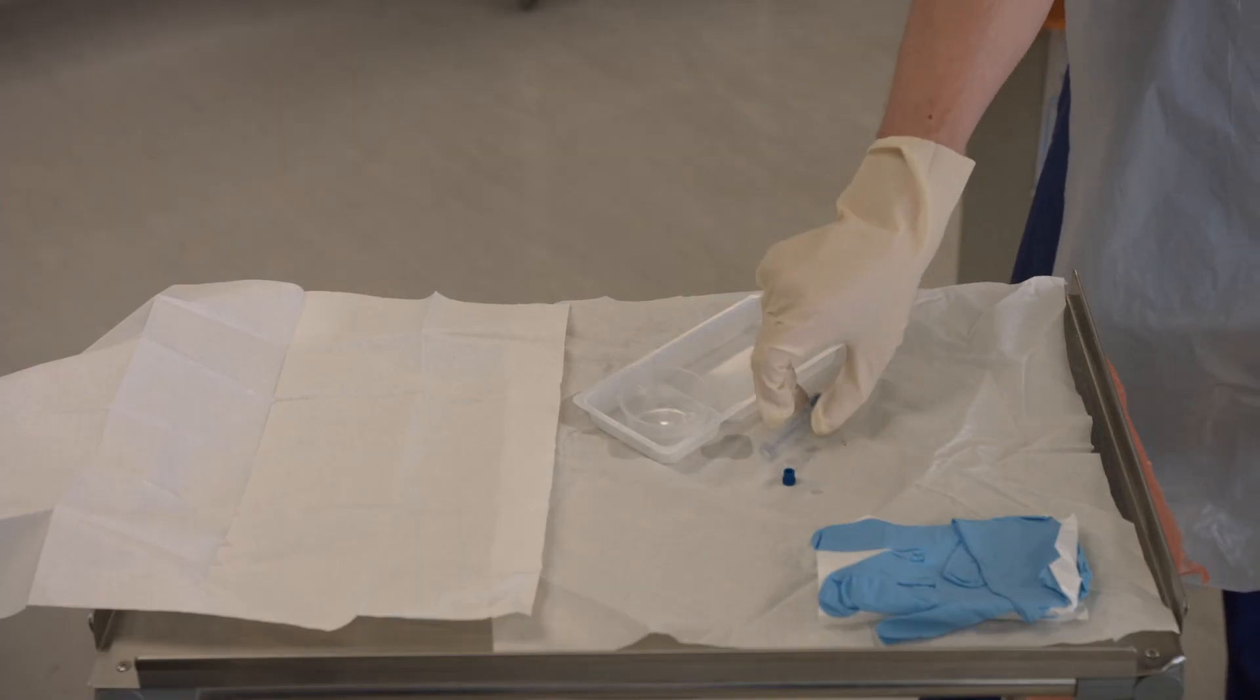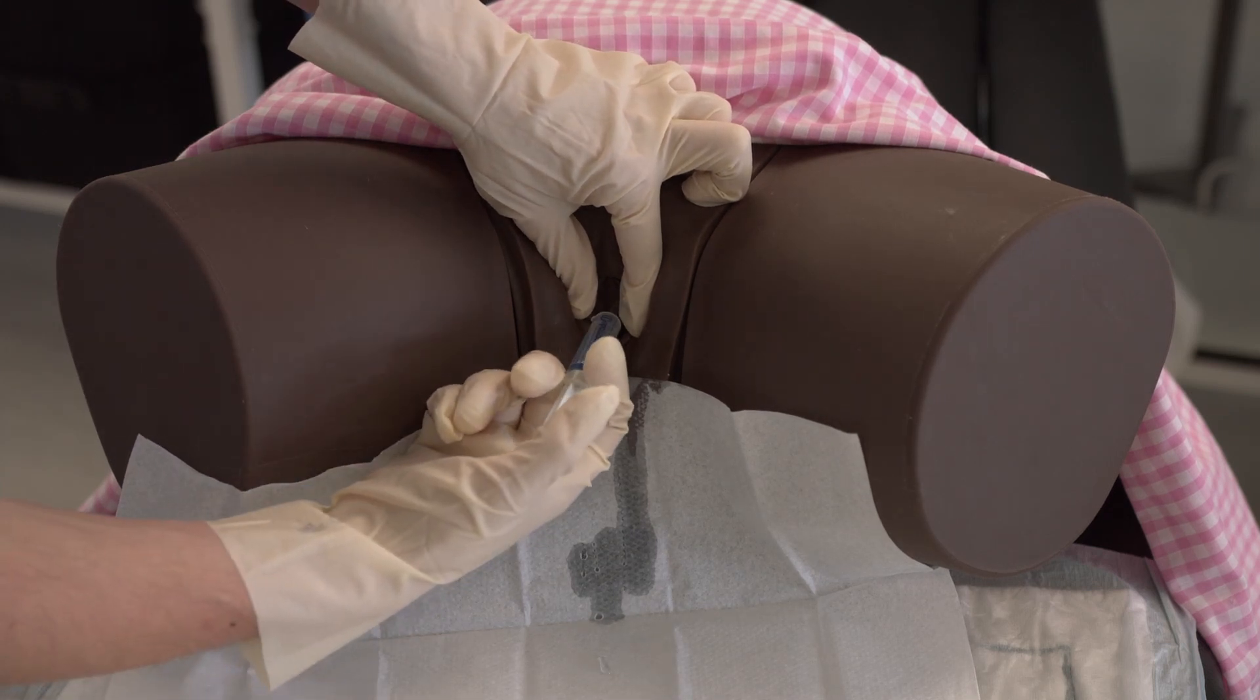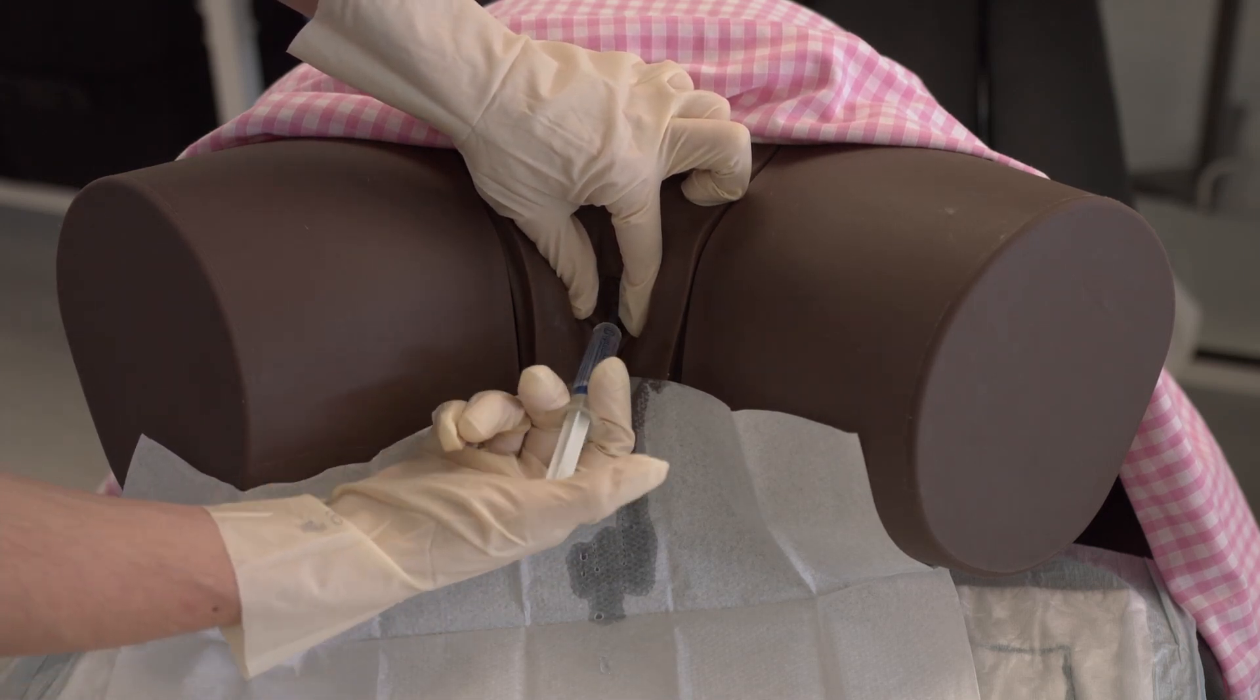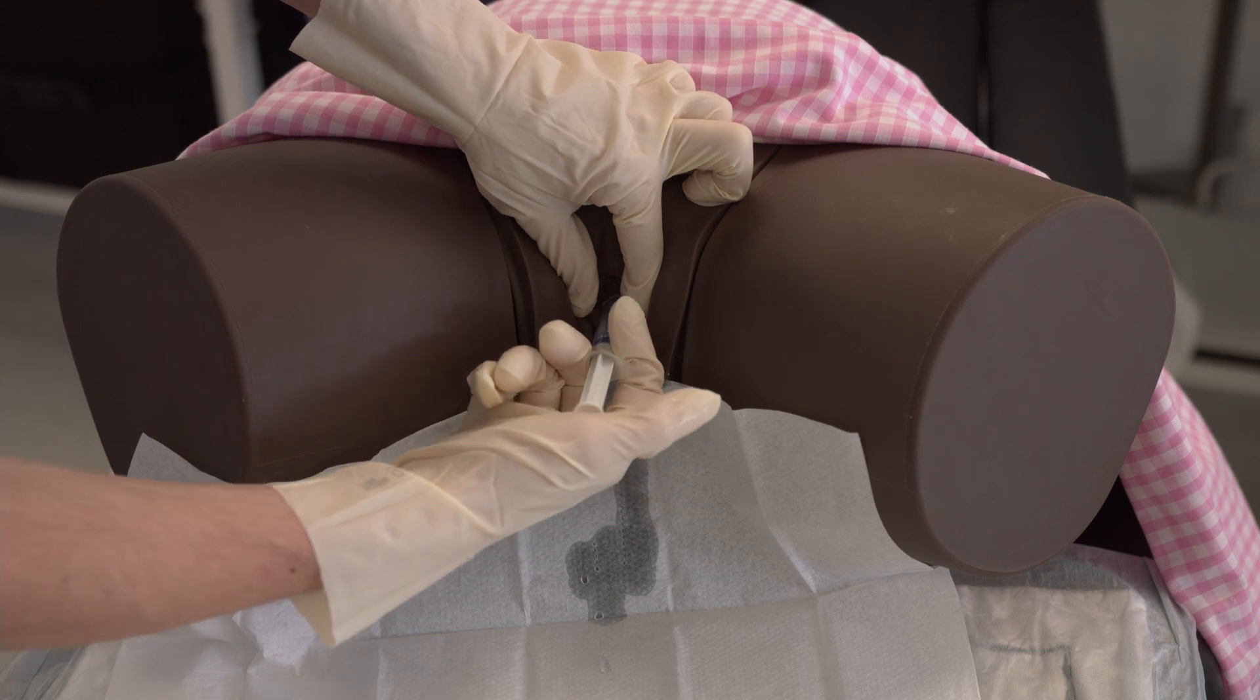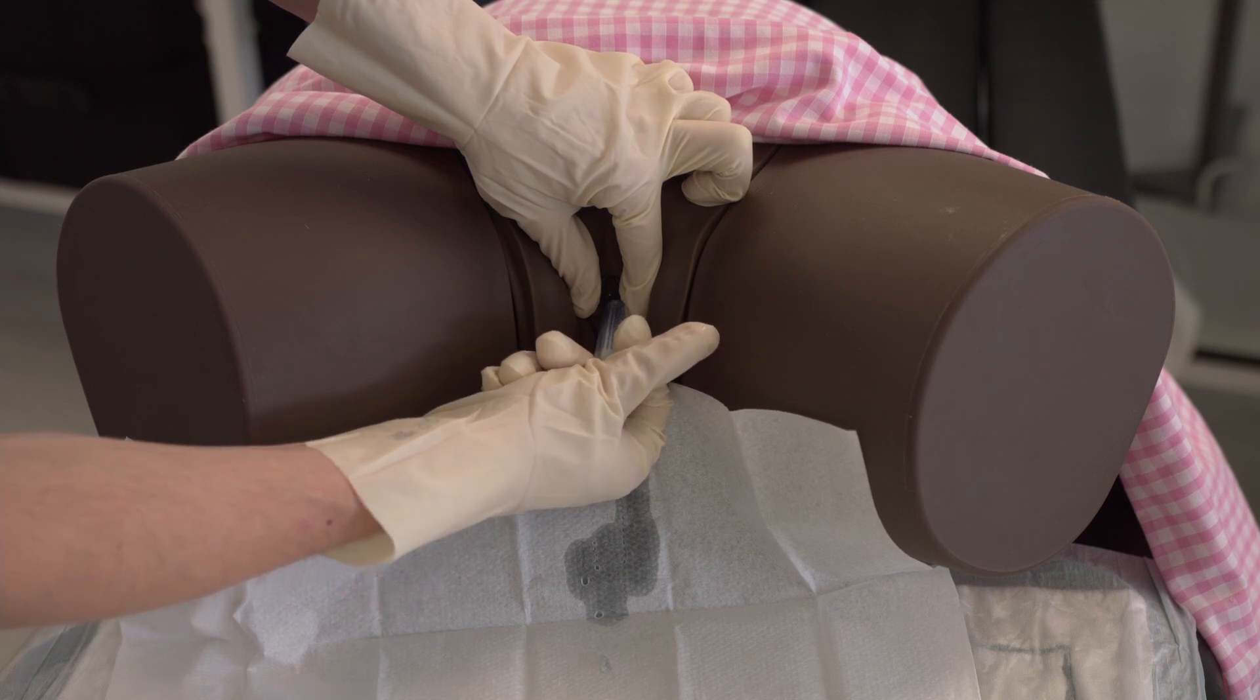Keep your left hand steady and in the same position throughout this process. Now take the lubricant syringe and gently apply some lube to the opening of the urethra. Then insert the tip of the syringe into the urethra and administer the remaining lube.